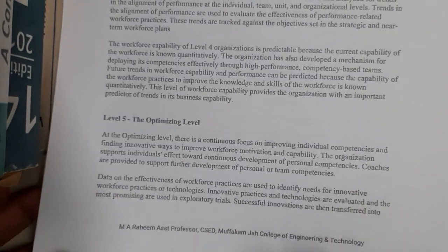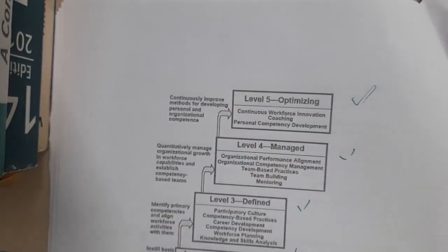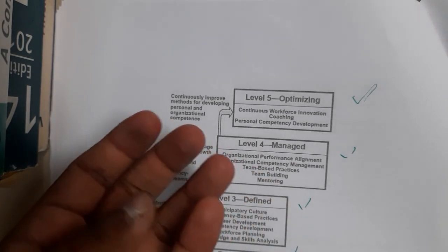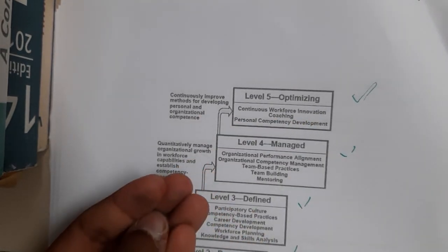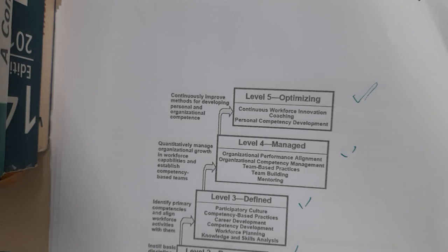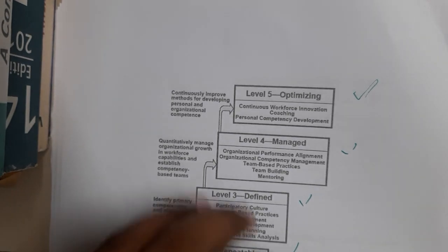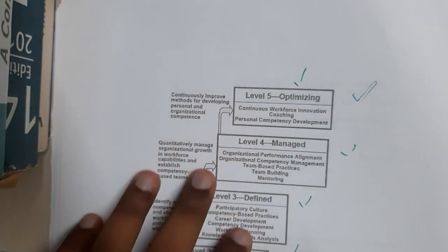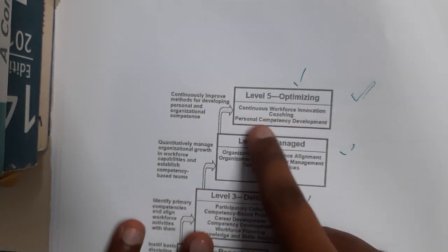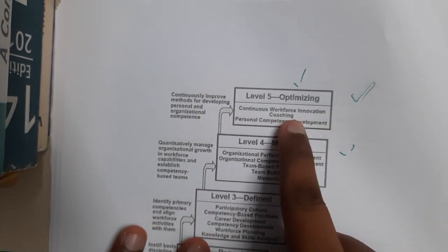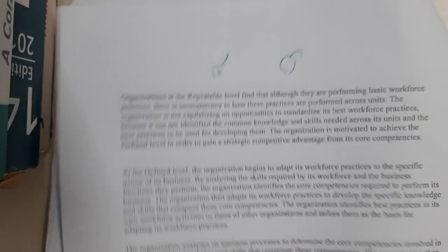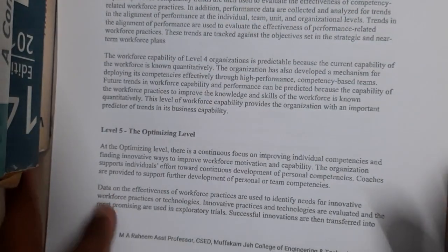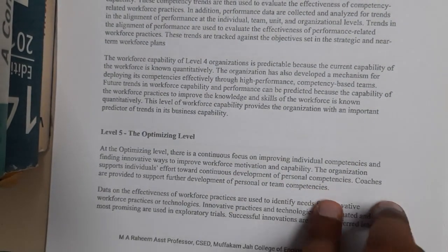The last stage is Optimizing. At the Managed level they are performing very well but may still be using some energy inefficiently — for example, they could train people in more languages as per risk requirements. At the Optimizing level, continuous workforce involvement, coaching, and personalized development are also taken into account. That is the last and final level of the People CMM.